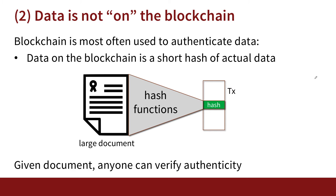Maybe the large document is a couple of megabytes big. We just compute this short hash — these are 32-byte hashes — and we only put the hash on the blockchain. The point is that once the document is presented to someone, anyone can verify its authenticity by checking that the correct hash is stored on the blockchain. So the blockchain itself stores hashes; it typically does not store actual document values. That's the second point to remember.